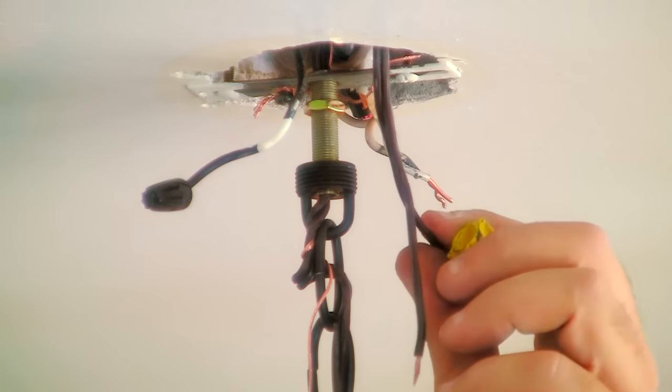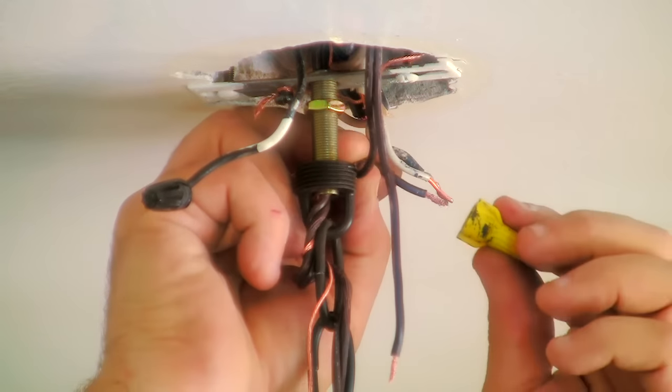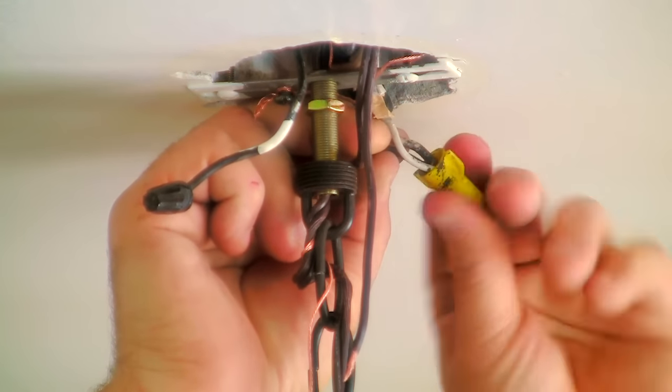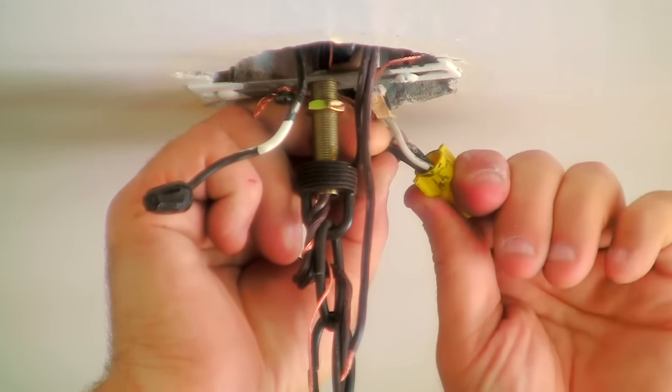This side here is marked with a little white spot, which is showing us that this goes to our white wires. We will go ahead and mount that, so I'll take the little wire nut off and now I'm putting it back on.